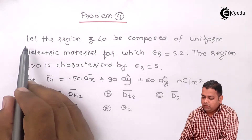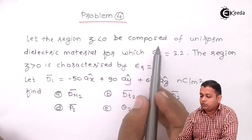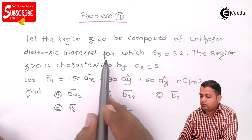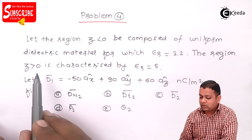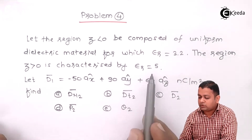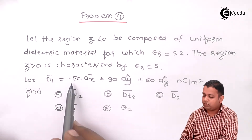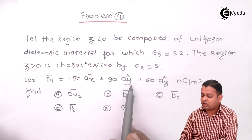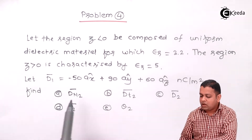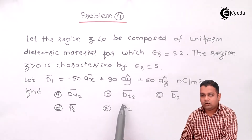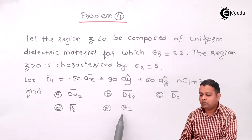Here is the problem statement: let the region Z less than 0 be composed of uniform dielectric material for which epsilon_r equals 3.2, and the region Z greater than 0 is characterized by epsilon_r equals 5. Let D1 bar equal minus 50 Ax cap plus 90 Ay cap plus 60 Az cap nanocoulombs per meter square. Find dn2 bar, dt2 bar, d2 bar, p2 bar, and the angle theta.